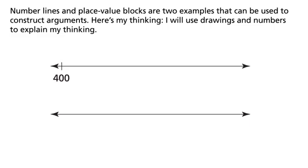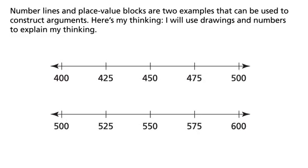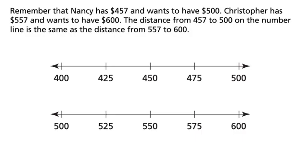Here's my thinking. I will use drawings and numbers to explain my thinking. Remember that Nancy has $457 and wants to have $500. Christopher has $557 and wants to have $600. The distance from 457 to 500 on the number line is the same as the distance from 557 to 600.